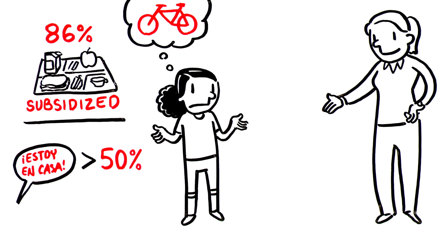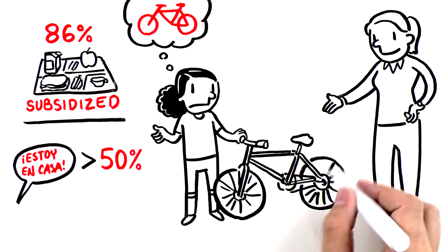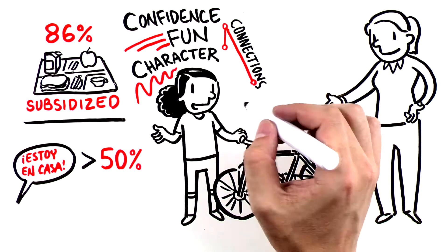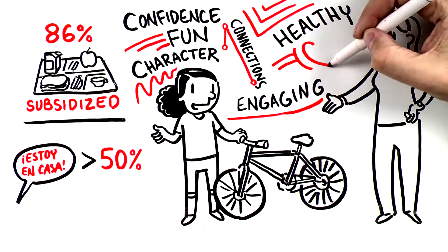By helping to outfit the 4th grade class with bicycles, teachers were able to promote confidence, character, and connections in a fun, engaging, and healthy way for the students.